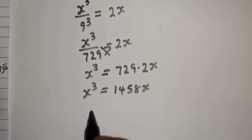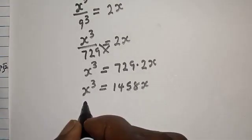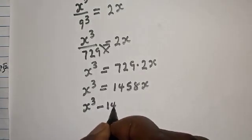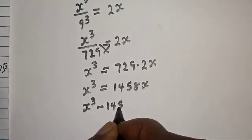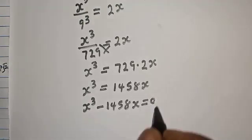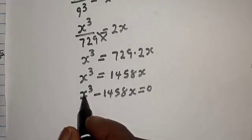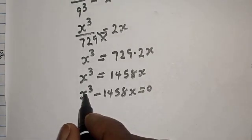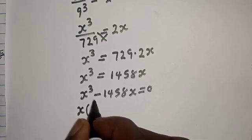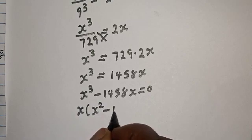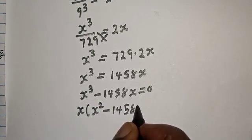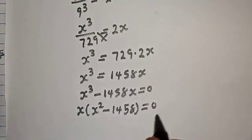Now, let's bring this to this side. x raised to the power of 3 minus 1458x is equal to 0. So then, x is common — this is x bracket x squared minus 1458 is equal to 0.